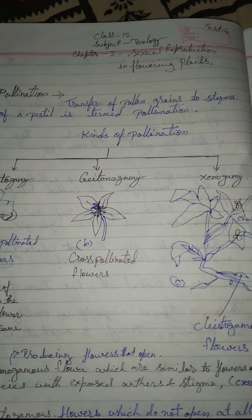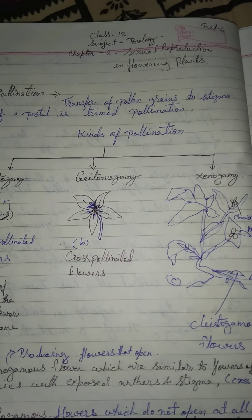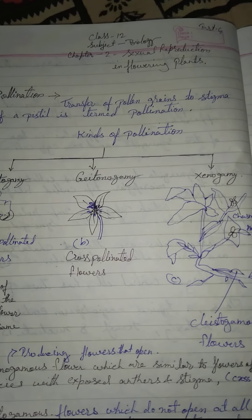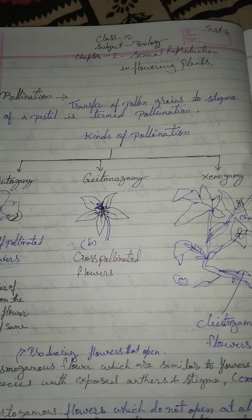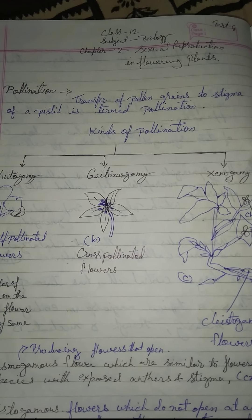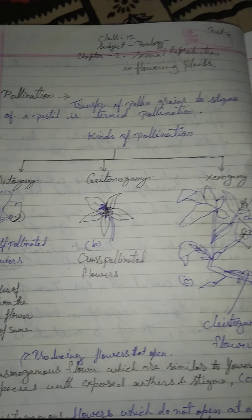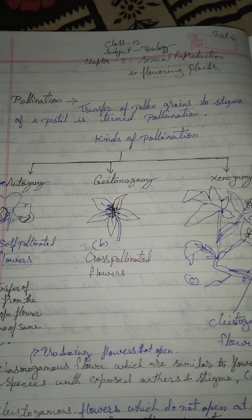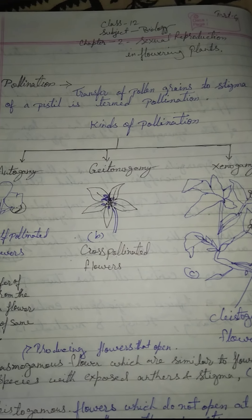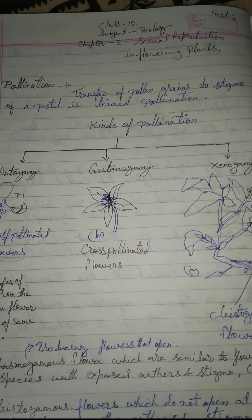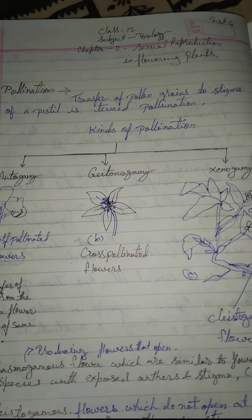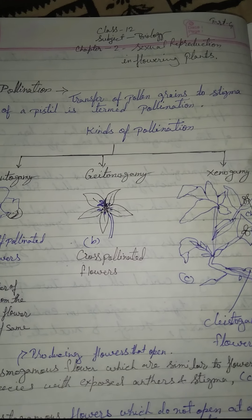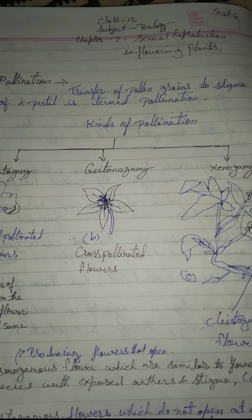Good evening everyone. Class 12, subject Biology, Chapter 2: Sexual Reproduction in Flowering Plants. Today we have discussed pollination. The transfer of pollen grains to a stigma of a pistil is termed pollination.